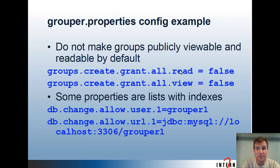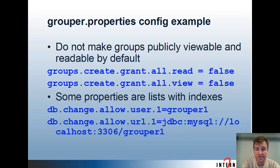For grouper.properties, as an example: if you want to make groups not publicly viewable by default, you can set groups.create.grant.all.read to false — it defaults to true — and the same for view. Some properties in the config files have indexes, like db.change.allow.user.1. If you're going to add another one, you would say db.change.allow.user.2, and so forth. That's a way to have one-to-many in a properties file.